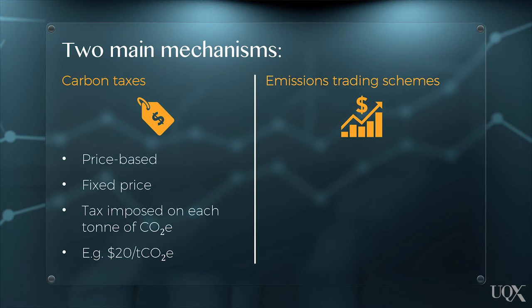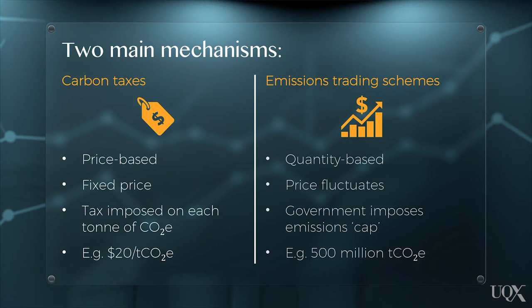Then there's emissions trading schemes. Instead of setting the price of carbon, the government caps the quantity of greenhouse gases that can be emitted by participating companies — for example, this cap might be 500 million tonnes of CO2e. This leaves the market to determine the price of carbon pollution, which fluctuates the same way that other market-traded commodity prices do.